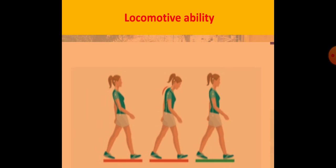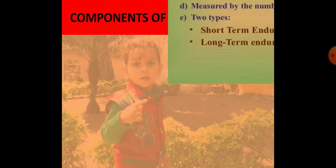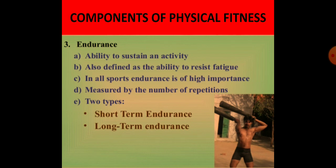So today we have discussed two components of physical fitness in detail: strength, which we revised, and speed, including its types and how it is utilized in sports activities. In the next video, we will move on to the next component: endurance.